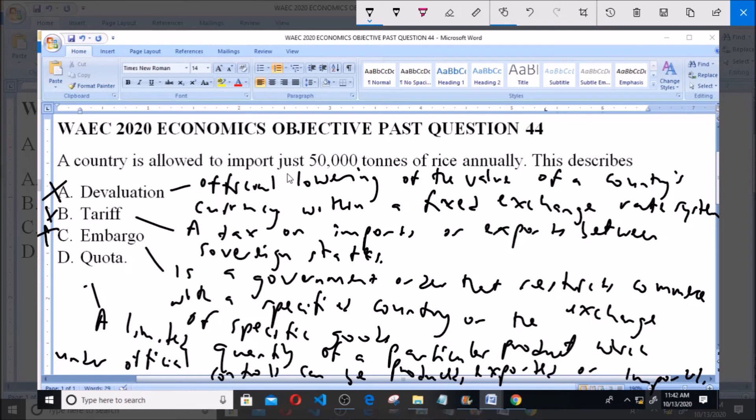Now as you can see, what you have in the question is a limited quantity of rice that is allowed or controlled to be imported. We define quota as a limited quantity of a particular product. So in this case, the particular product is rice, which under official controls can be produced, exported, or imported.